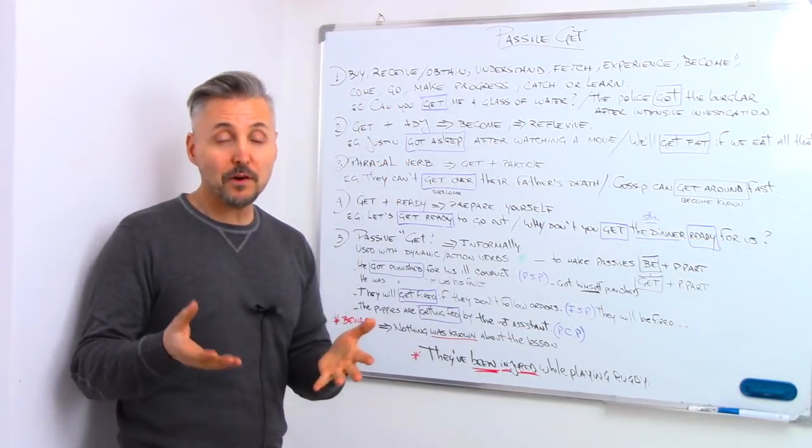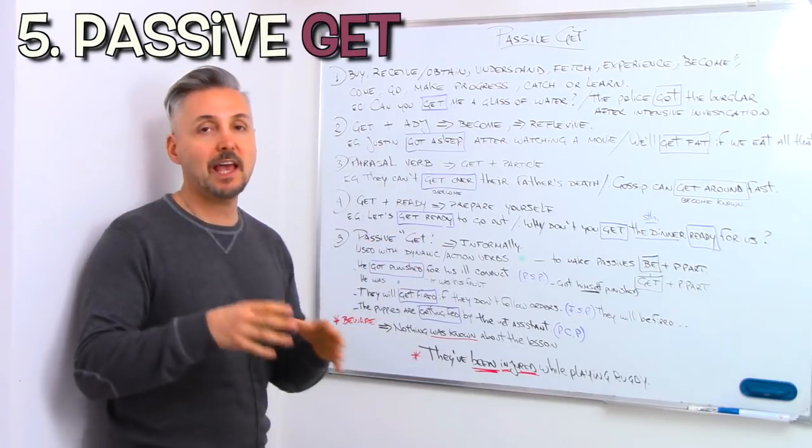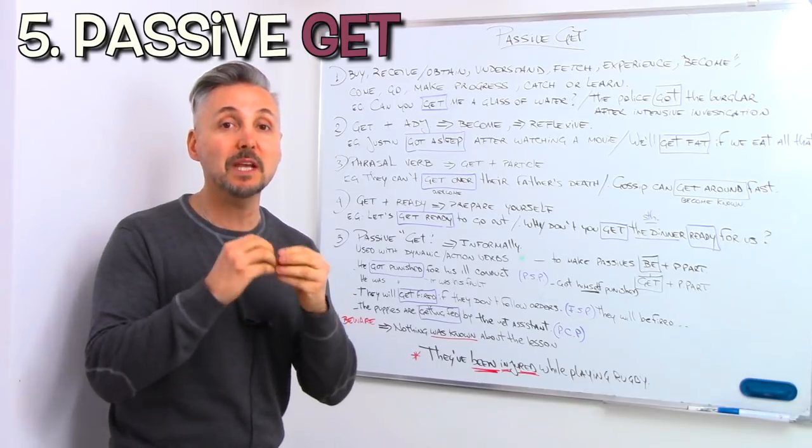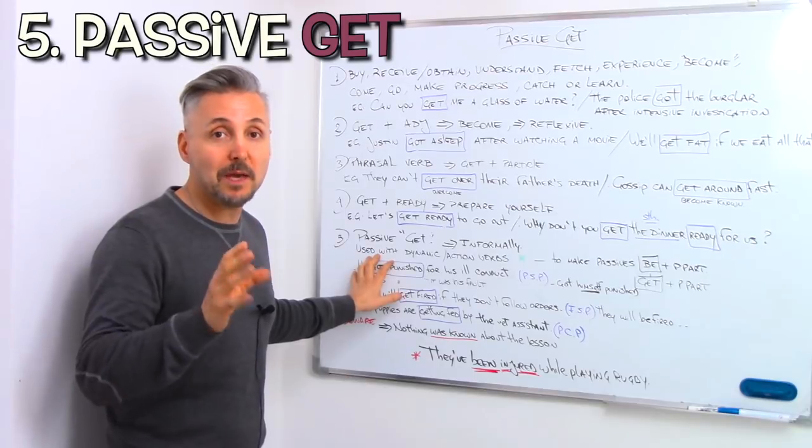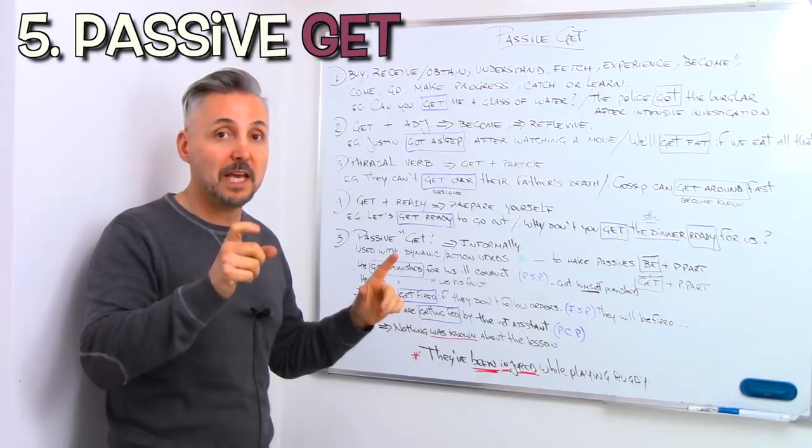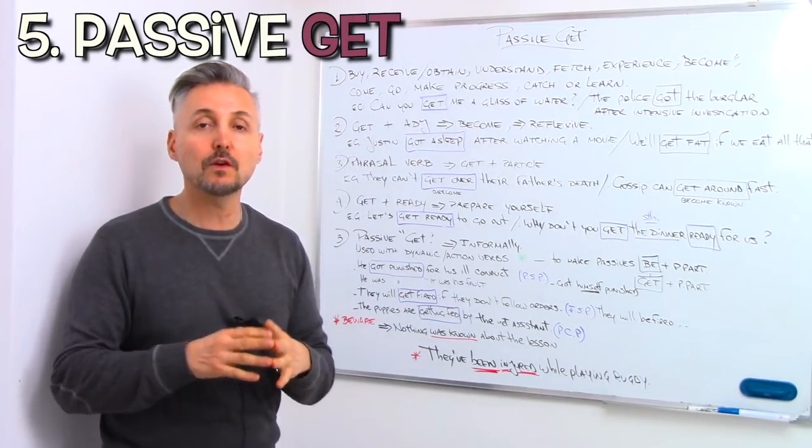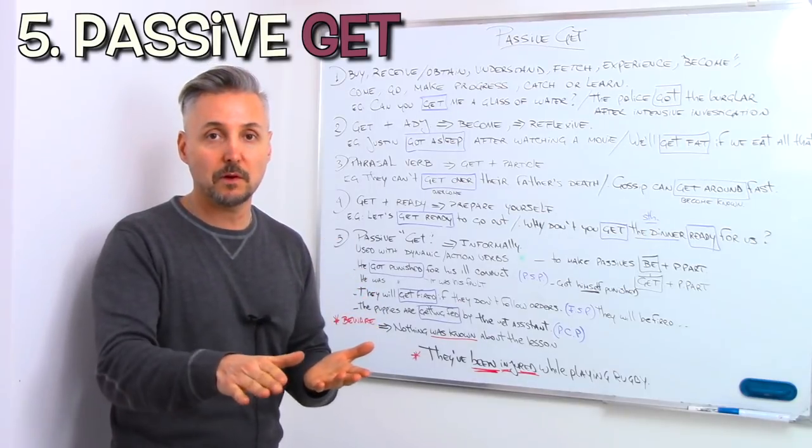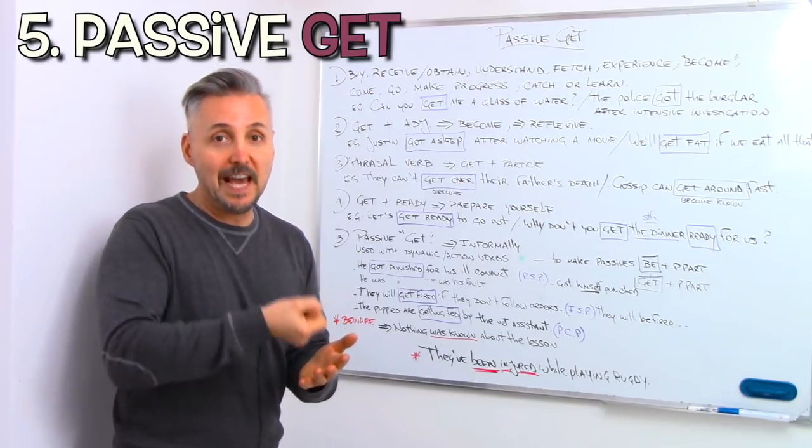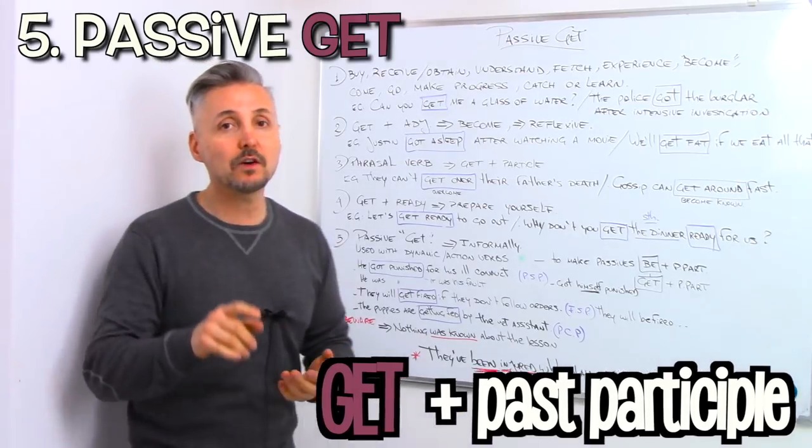Now the fifth point, and this is what the lesson is made for, the passive GET. Passive GET, and we use it informally, and be careful because it can slightly change the meaning of a sentence. It's used with dynamic or action verbs, and if you don't know what a dynamic or a stative verb is, you may click here to watch that lesson. You know that to make a passive, we need the verb TO BE plus the past participle, right? In this case, we replace the verb TO BE with GET. So GET plus past participle. Let's take a look at my examples.